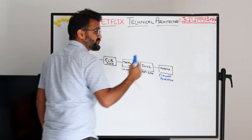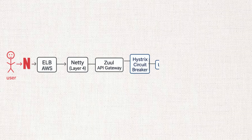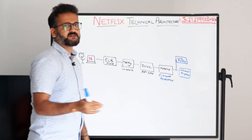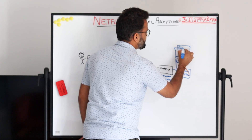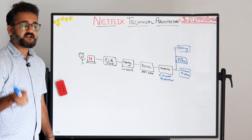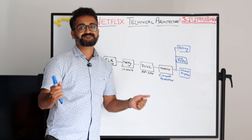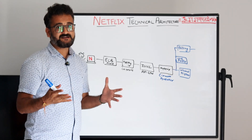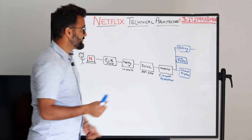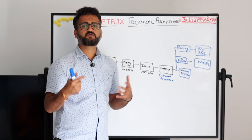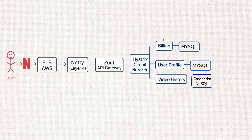After Hystrix comes the actual meat of the work — the microservices. There could be a microservice for user profile, another for view history tracking what the user is watching, and another for billing to verify the user has the right subscription level. Hystrix treats every microservice independently. The billing service is transactional and needs ACID transactions at the database level, so it uses MySQL. User profile may also use MySQL, whereas viewing history — which can be unstructured or semi-structured data — uses Cassandra as a NoSQL database.